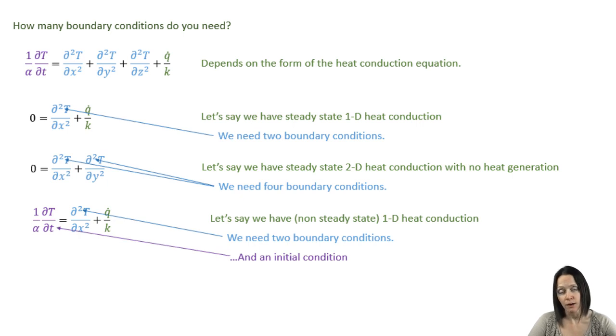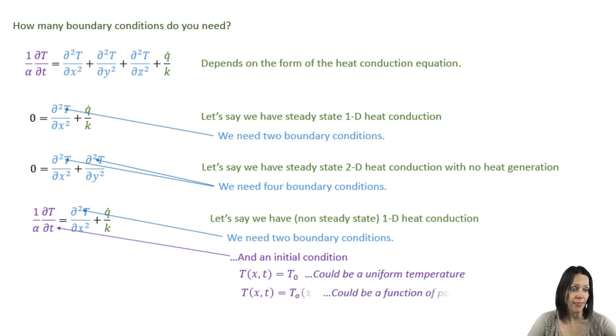You'll need two boundary conditions, but you will also need an initial condition that tells you what the profile is at the beginning of the process, at T equals zero. It could be that the medium was at a uniform temperature, or it could be that the medium was not at a uniform temperature, but the temperature profile at time equals zero is known.